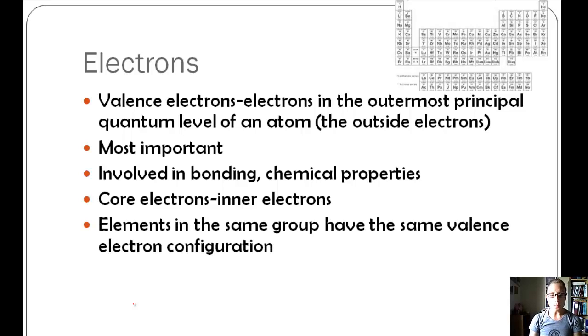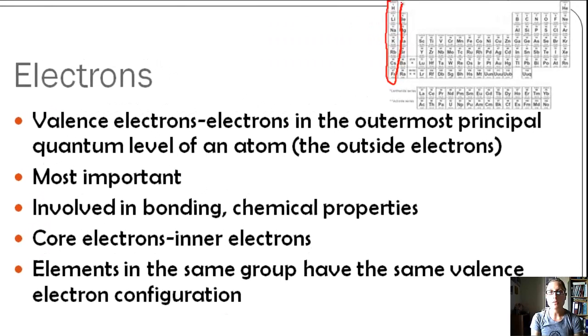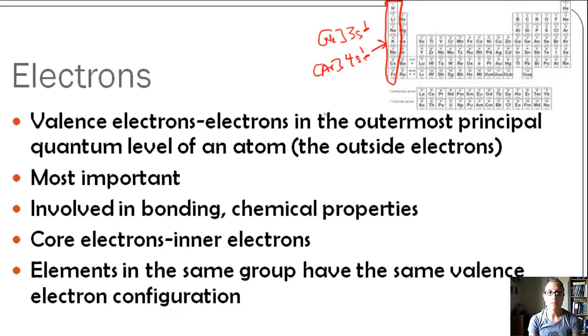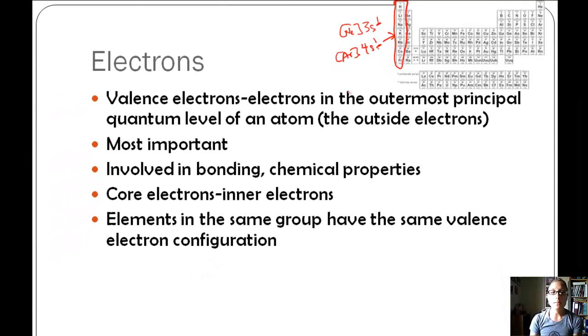Elements in the same group, and remember, groups are vertical. We could look at group 1, the alkali metals, and they all have one valence electron. Remember from sodium, it was neon 3s1. Potassium is argon 4s1. So they both have one valence electron. That pattern continues for all of group 1. Elements in the same group have the same valence electron configuration.